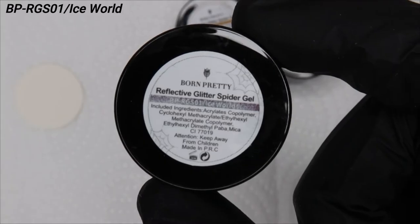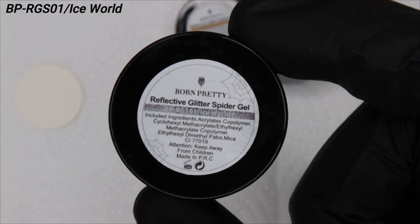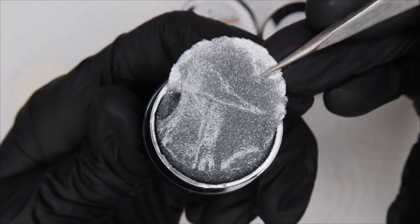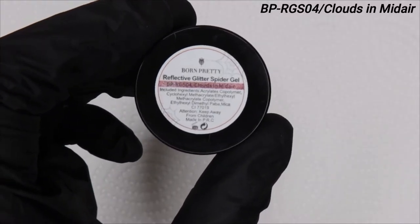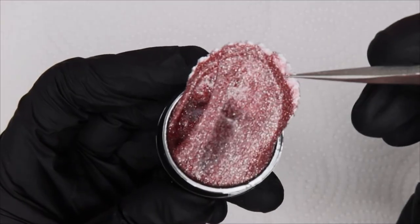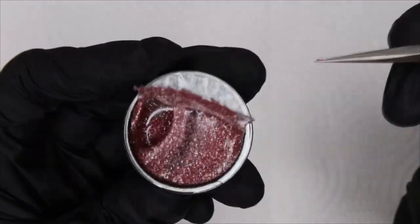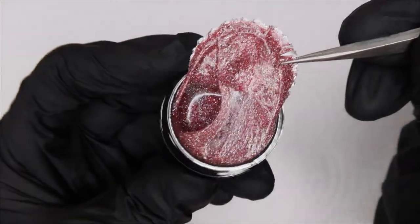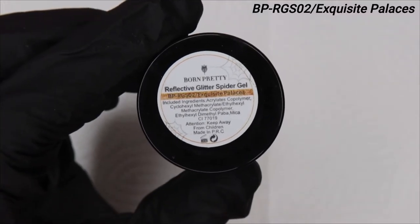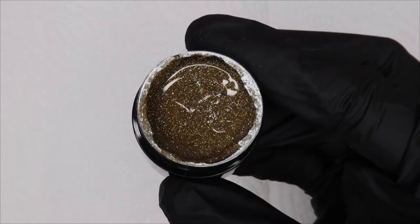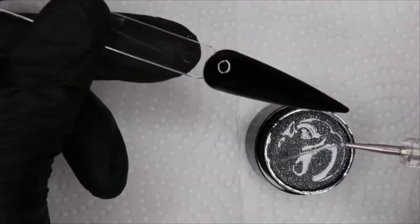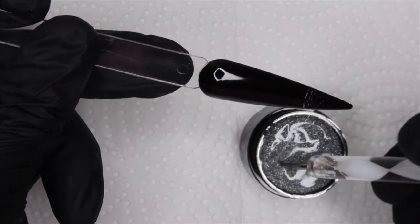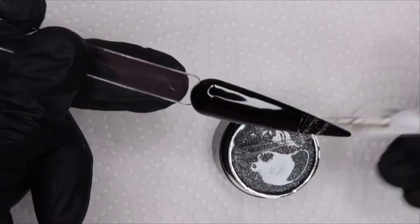Next are the spider gels. So I didn't swatch the black, white and red that I had because we've already seen that. So I decided to swatch these. These are the reflective glitter ones. The names are a little bit faded off of the lid so I'll put it somewhere on the screen so you can see precisely what name it is. If you do want any of these things for yourself, I have a discount code with Born Pretty and it is Phyllis. I'll also put that on the screen. But anyways, let me get into the spider gels. I enjoyed using these. They are fun to work with.